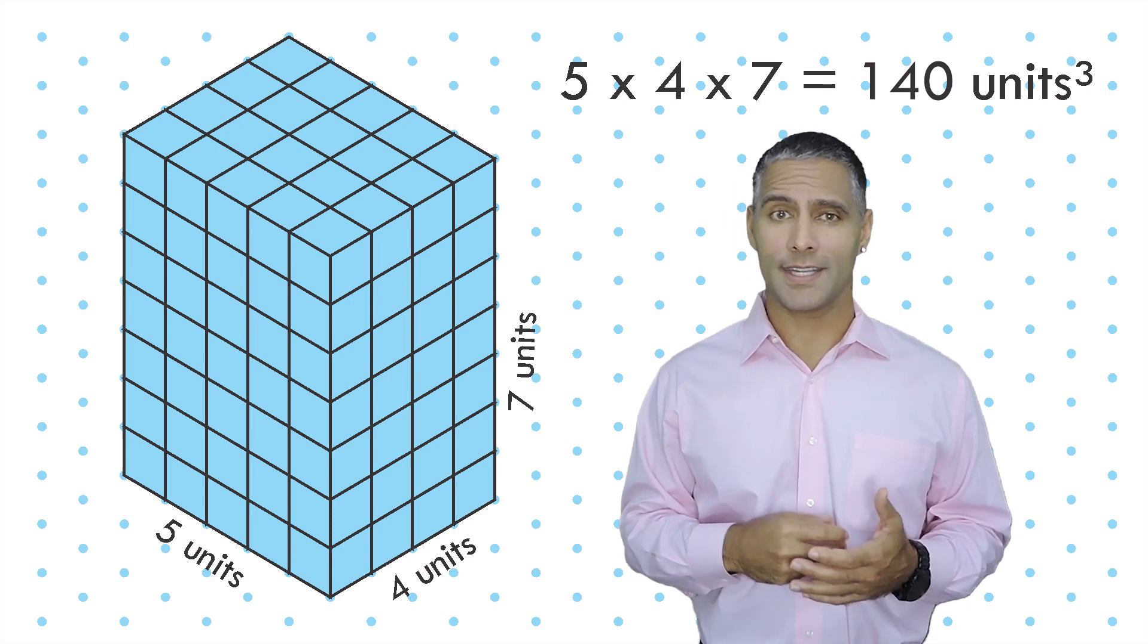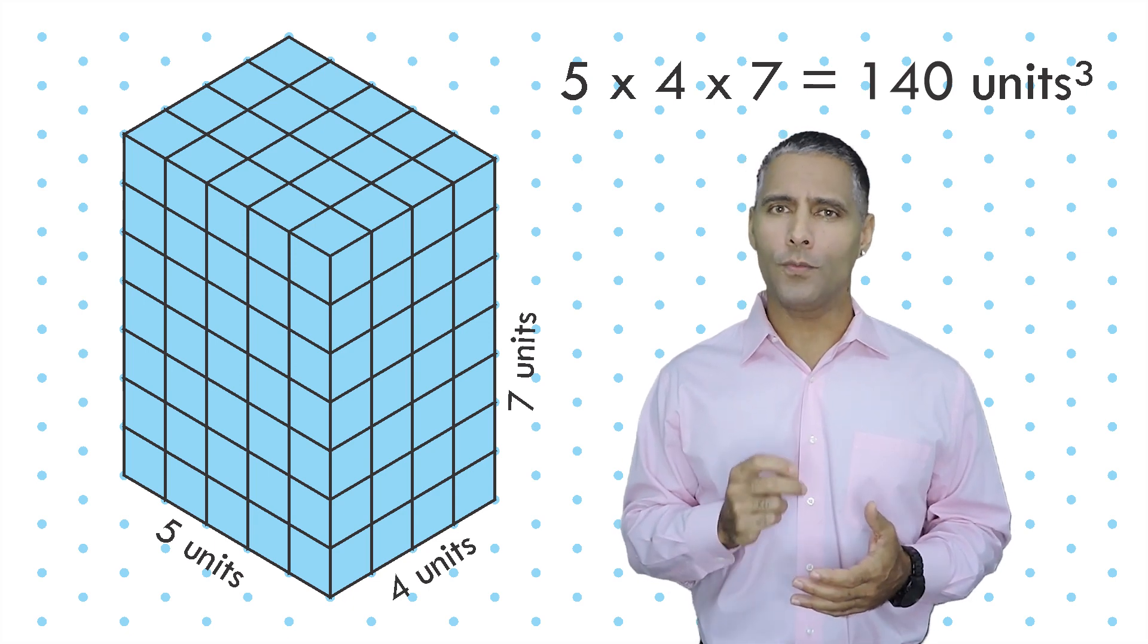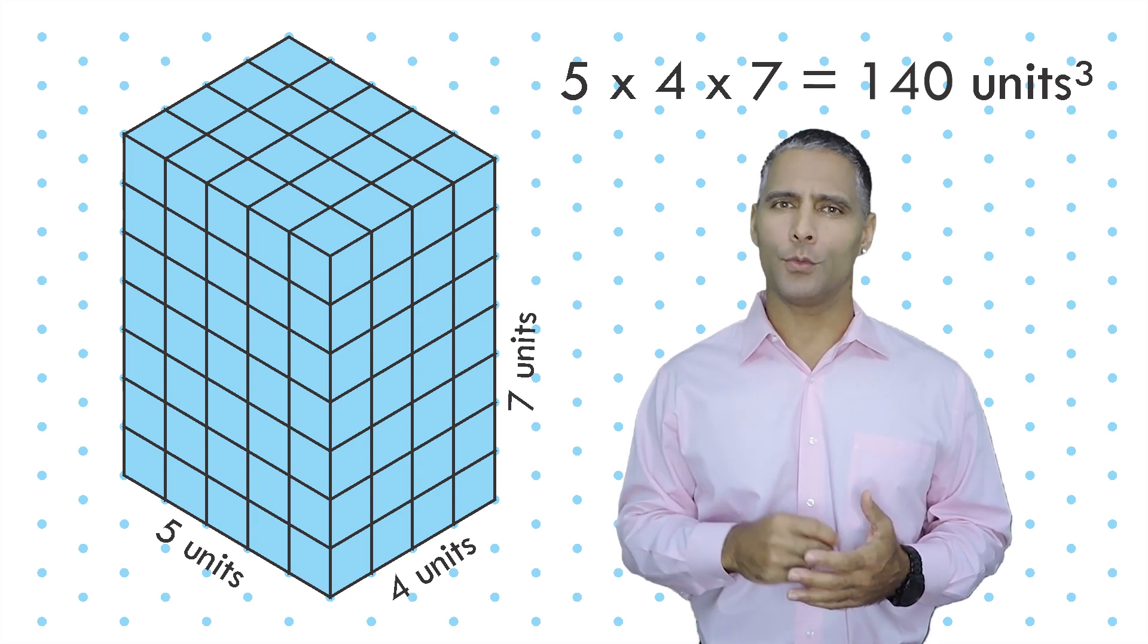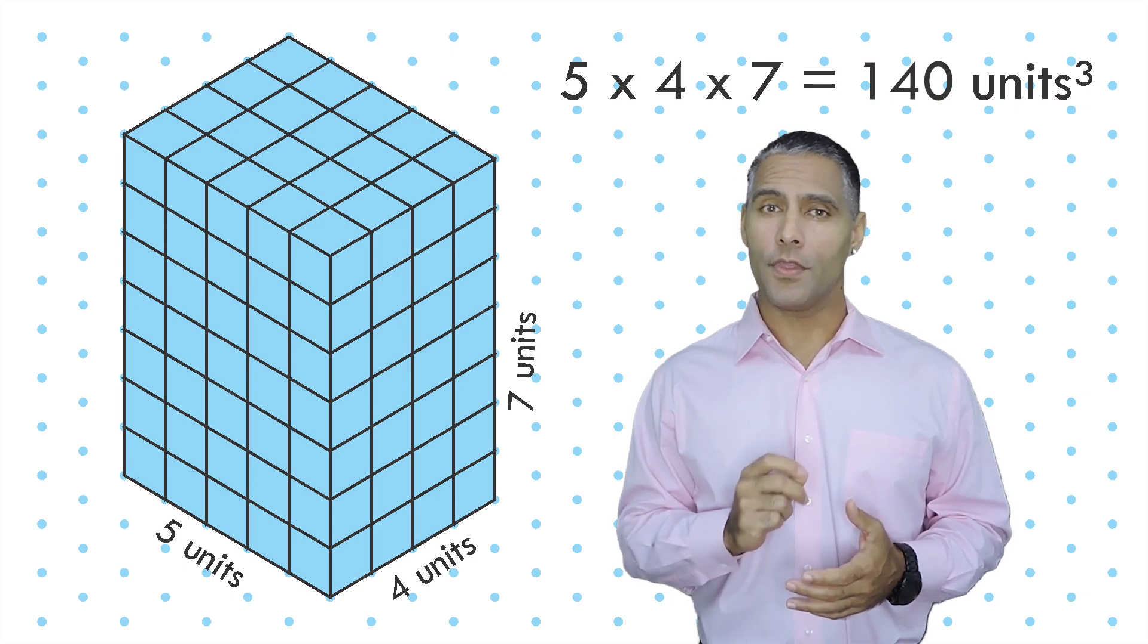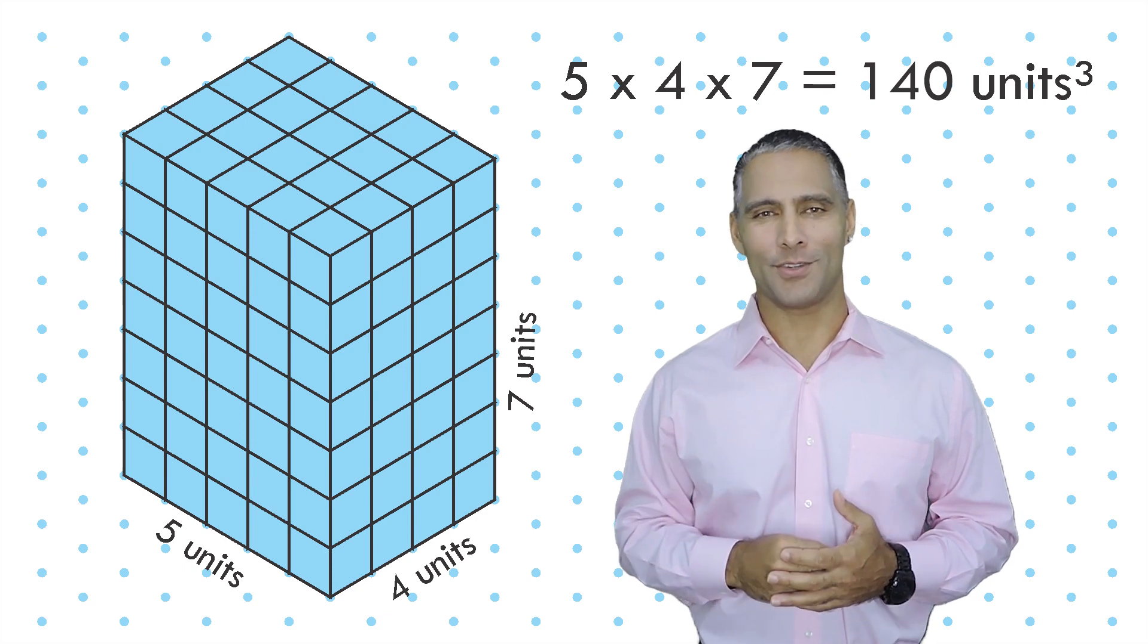Other geometric solids, such as a triangular prism, cone, pyramid, or a cylinder, have their own volume formulas based on their unique dimensions. However, the volume of those figures is still the amount of cubic units it would take to fill that object.